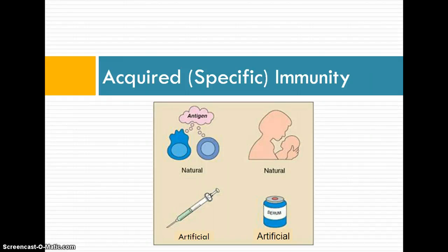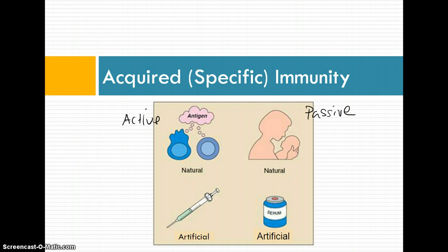Hi everybody and welcome to the second of two screencasts on the immune system. In this one, we're going to be looking at the types of specific immunity that we can acquire — not the nonspecific kind like your skin and your tears. If you recall from the first video, there are natural and artificial ways to acquire specific immunity. Within the natural ways, there are active — such as literally getting sick and fighting the infection — and passive, such as naturally acquiring immunity through breast milk.